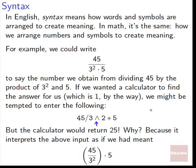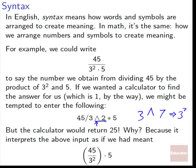If you haven't seen this symbol, it's called a caret, and it means exponent. So if we write 3 caret 7, that means 3 to the 7th. On lots of calculators, it can't actually raise the numbers visually, so we use the caret to symbolize that the next thing is an exponent. However, what "next thing" means is really only the very next thing. So when it sees 45 divided by 3 caret 2 times 5, it reads that as 45 divided by 3 squared, then considers the division complete and moves on to times 5. So the syntax really matters.